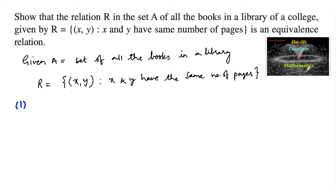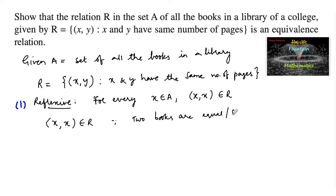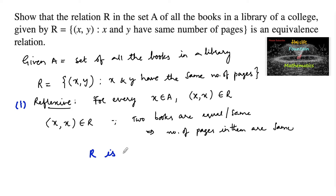So, let us check for the reflexive. The condition for reflexive is: for every x belonging to A, (x, x) must belong to the relation R. Consider a book x. Then (x, x) belongs to R, since if two books are the same, the number of pages are also the same. Therefore, we can consider that this relation R is reflexive.